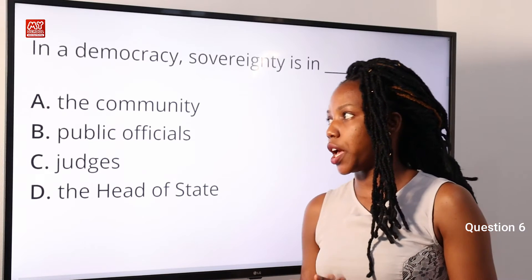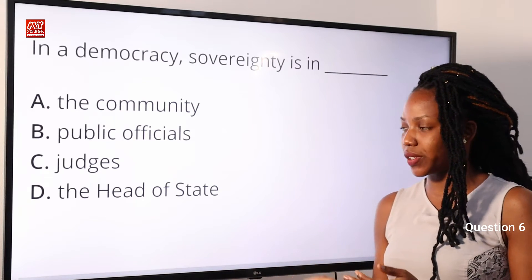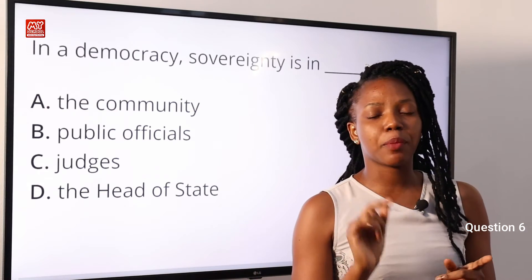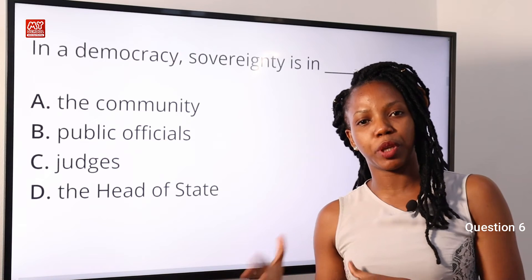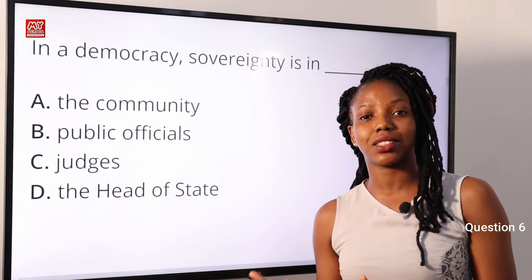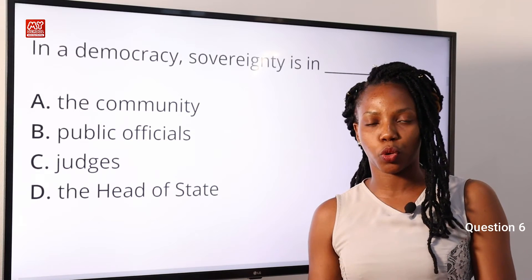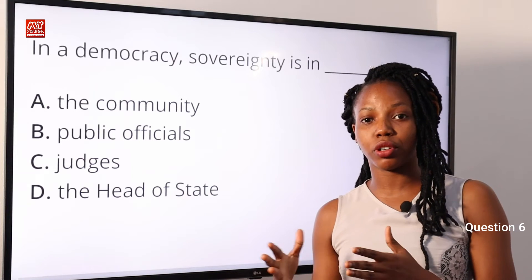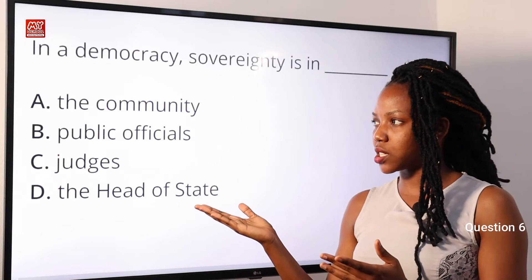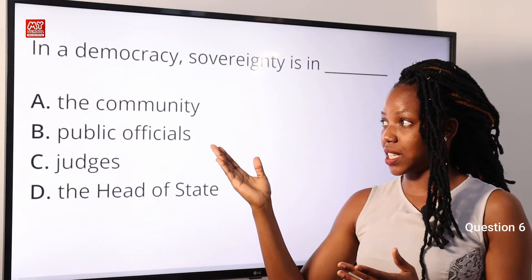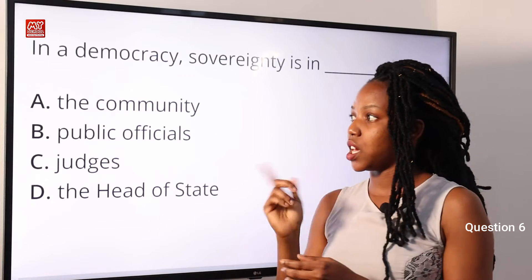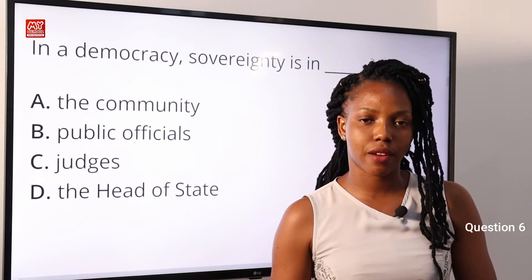Question 6: In a democracy, sovereignty is in — A: the community; B: public officials; C: judges; D: the head of state. Democracy emphasizes the people's ability to exercise power directly or through their representatives. When we talk about democracy, the emphasis is on the people. Option A is the correct answer — in a democracy, sovereignty is in the community.